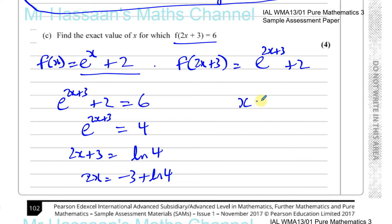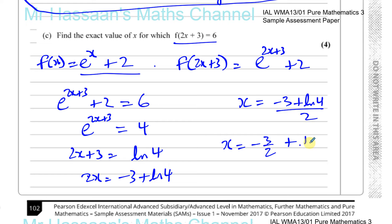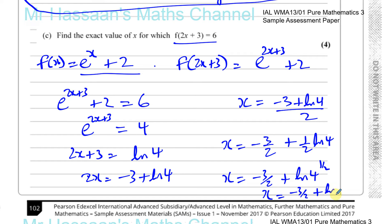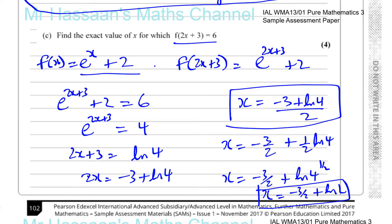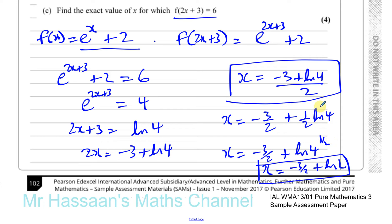So x equals minus 3 plus ln 4, all over 2. That's perfectly fine as an answer. If you wanted to put it as separate terms, you'd write minus 3 over 2 plus one half ln 4. This can be simplified further: one half ln 4 means ln of 4 to the power of one half, which is ln 2. So you could write x equals minus 3 over 2 plus ln 2. Both forms are acceptable since the question just asked for the exact value. If you do use separate terms, it's better to simplify the ln part as much as possible.